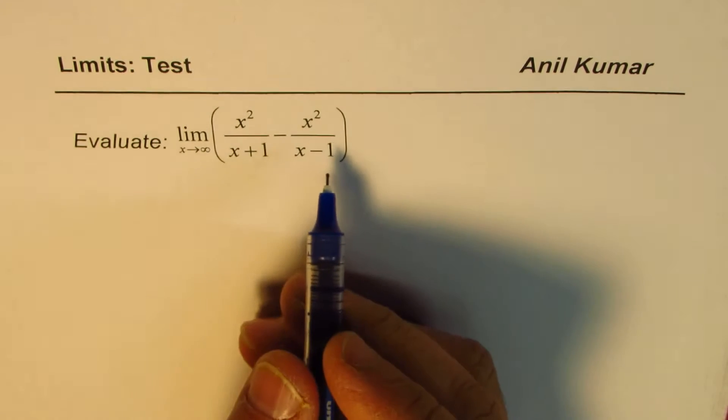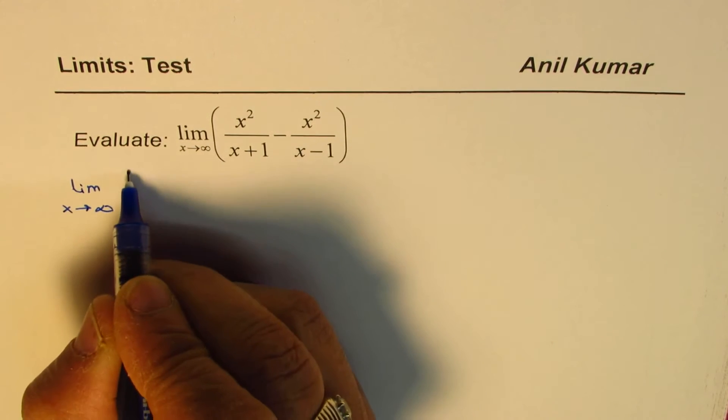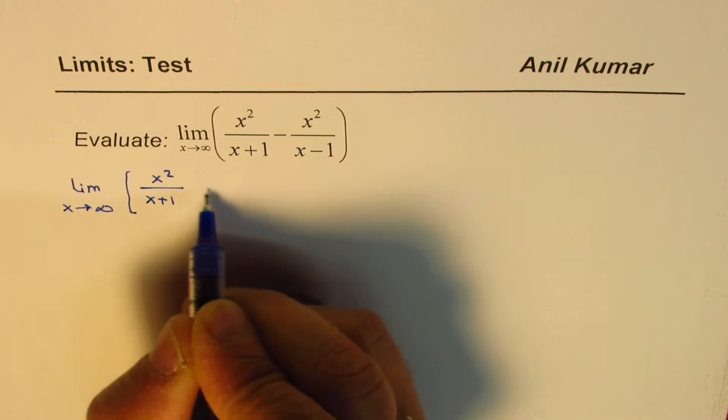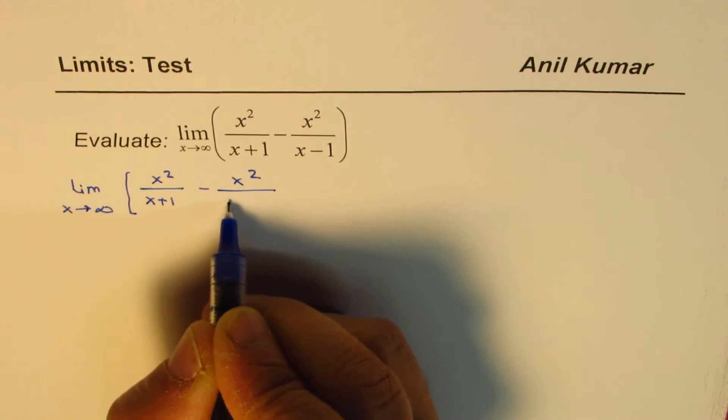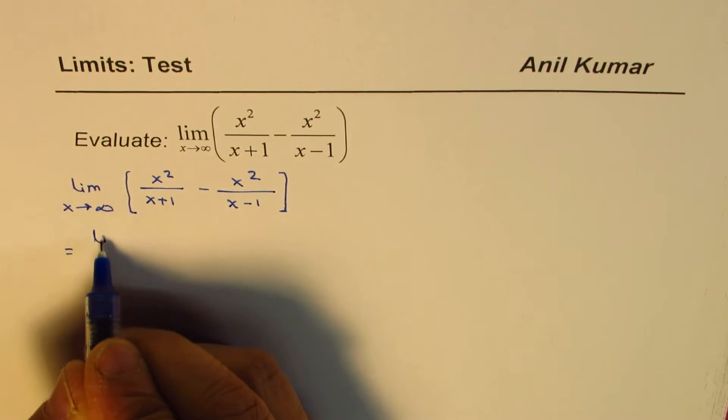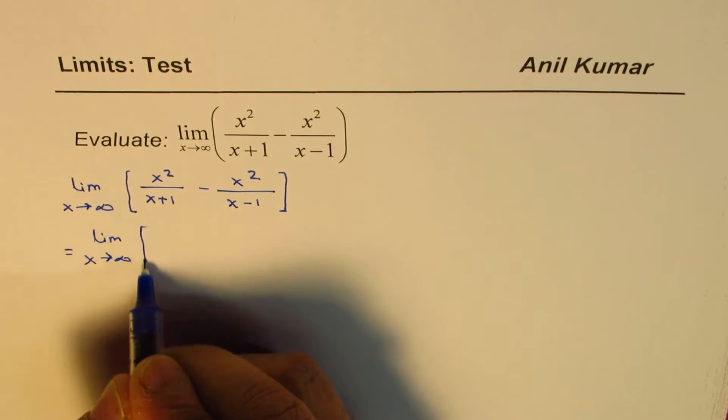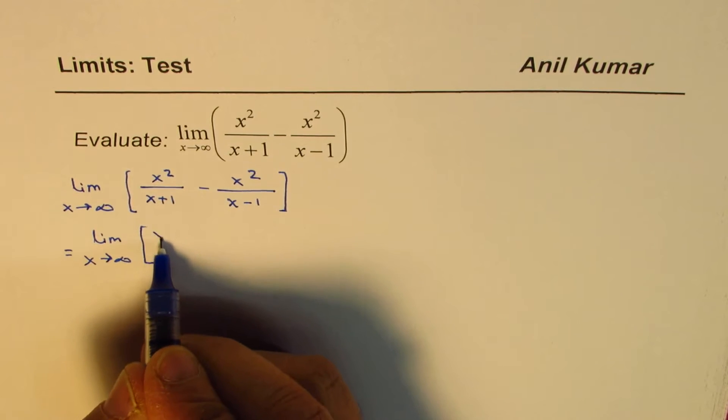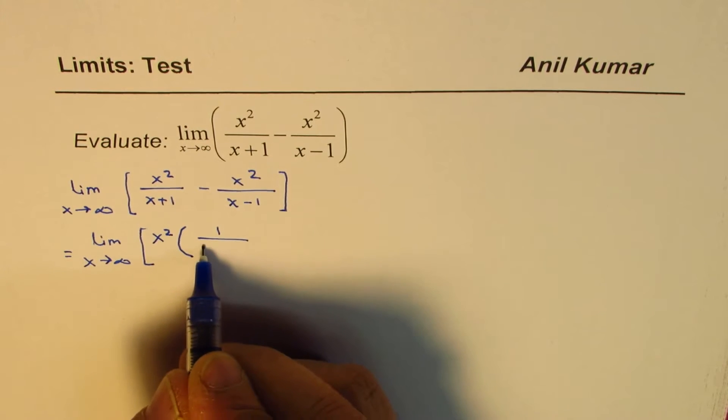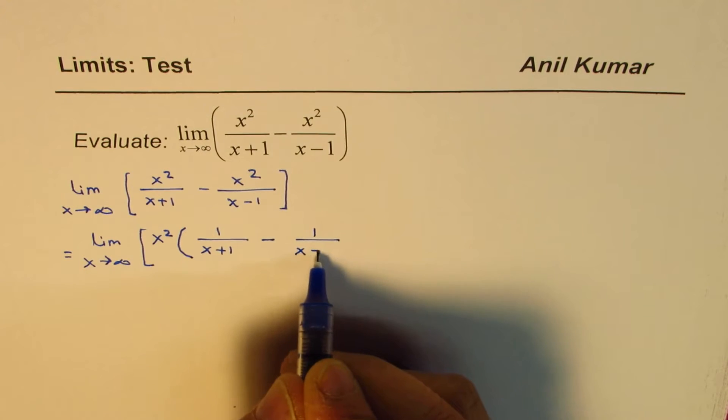Now let us see how to evaluate it. So the question is, limit x approaches infinity, and what we have here is x squared over x plus 1 minus x squared over x minus 1. Now let us simplify this a bit, because these things could become really complicated. So what I will do here is, I'll take x squared common. So what we have here is 1 over x plus 1 minus 1 over x minus 1.